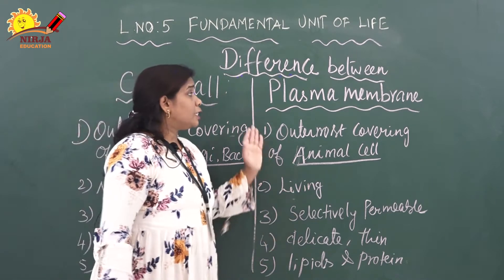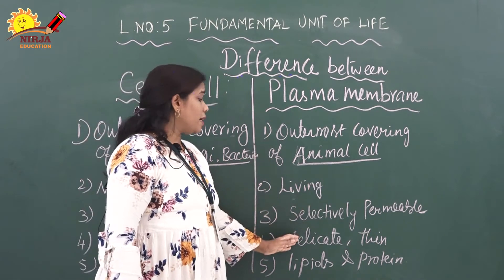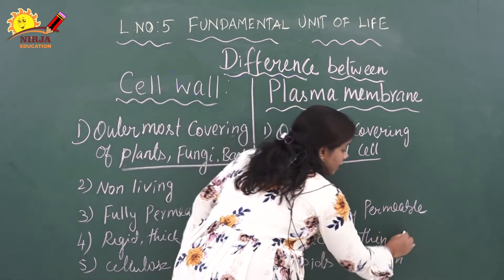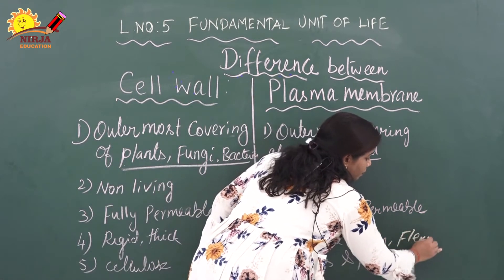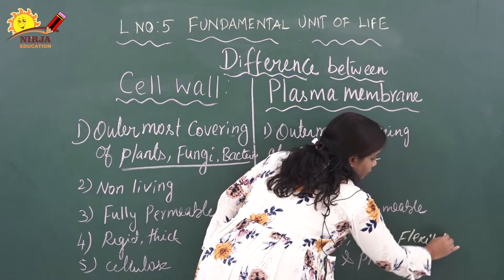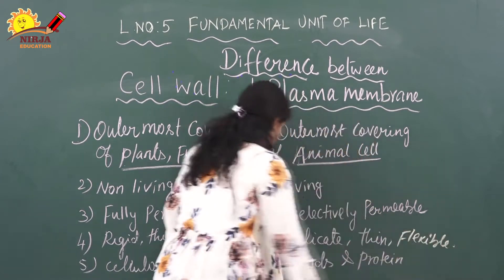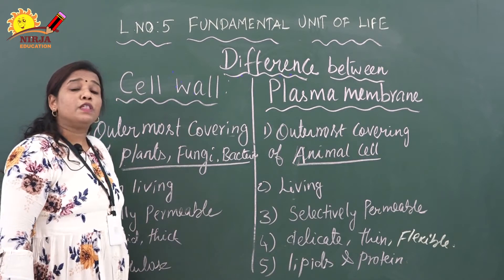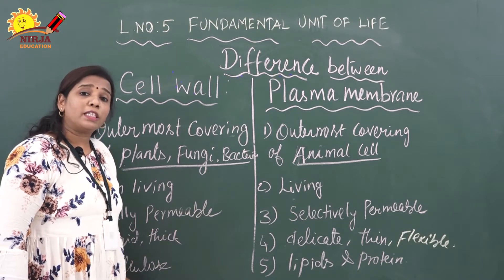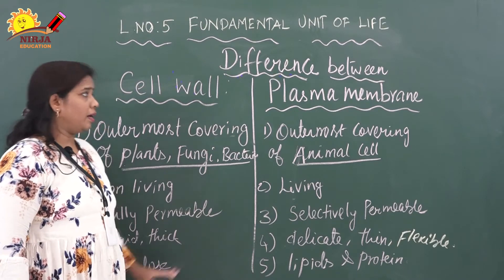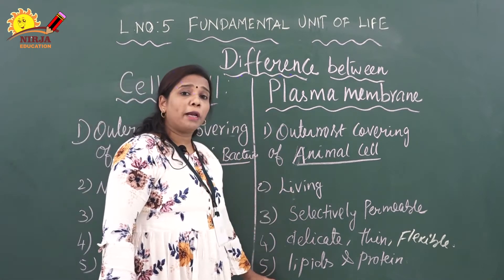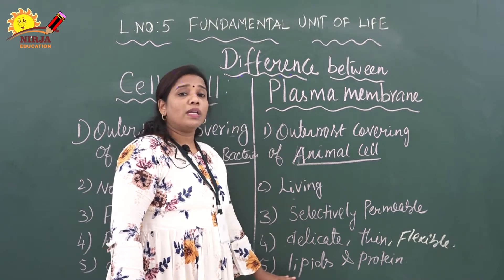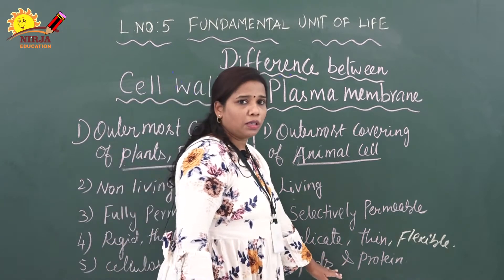The plasma membrane is delicate, thin, and flexible. The cell wall is made up of cellulose, which is a complex carbohydrate, but the plasma membrane is made up of two substances: lipid and protein.